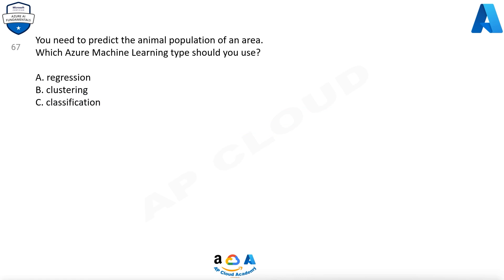Question 67. You need to predict the animal population of an area. Which Azure Machine Learning type should you use? A. Regression. B. Clustering. C. Classification. The answer is A, Regression.